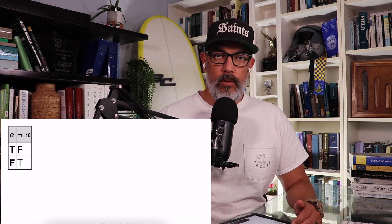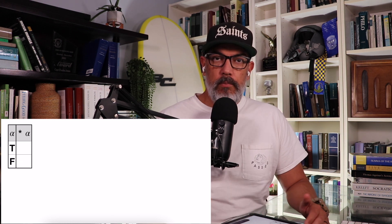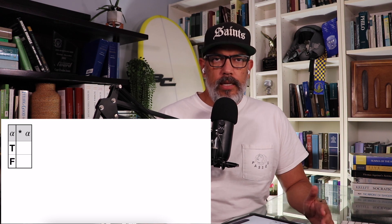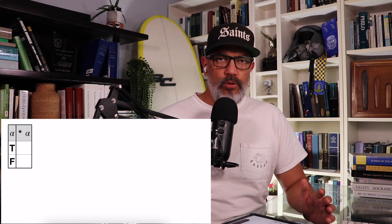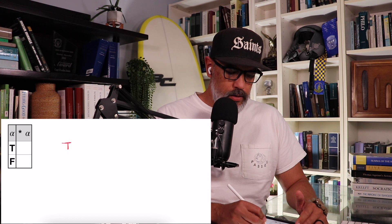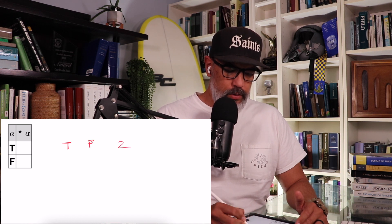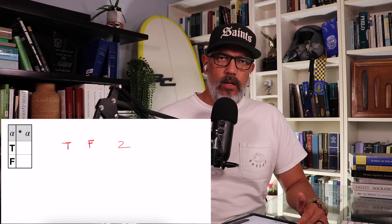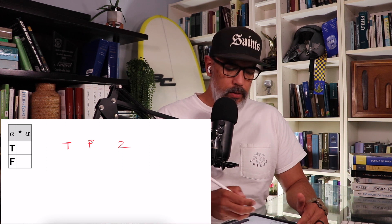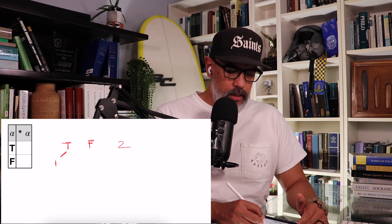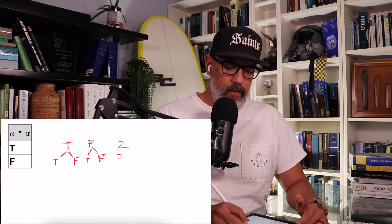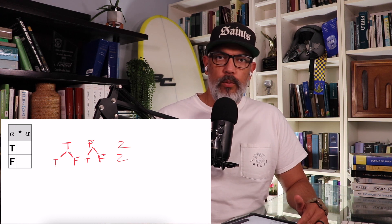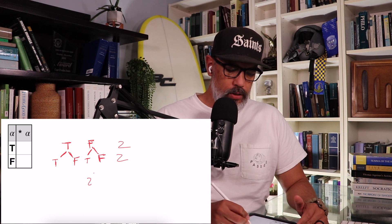But that's not the only possible truth table that we could have. What kinds of truth tables could we have? Let's consider a blank connective — star-alpha. We're not sure what this connective can be. Let's consider all the different possible combinations of truth values. When alpha is true, we have two options: star-alpha could be true, or star-alpha could be false. And then when alpha is false, star-alpha can again be true or false. So we have two times two options — two squared — four options.